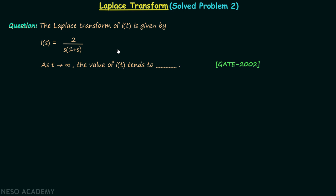In this lecture we will solve one numerical data type question taken from the GATE 2002 exam. We will first read the question and then solve it. According to the question, the Laplace transform of i(t) is given by I(s) equal to 2 over s multiplied by 1 plus s, and as t approaches infinity, the value of signal i(t) tends to?